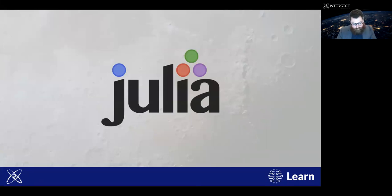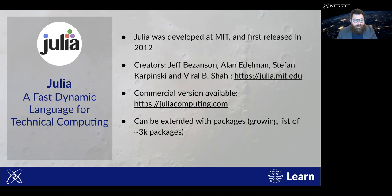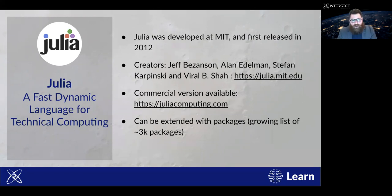Onto Julia — the most recent language we'll discuss. It was developed in 2012 at MIT. There is also a commercial version available at juliacomputing.com where universities can pay for a support package. Julia currently has a growing list of around 3,000 packages — and that number has likely been updated since we last taught this course. As Julia grows in popularity, which it is showing signs of doing, that 3,000 packages will surely extend as it becomes more widely used.